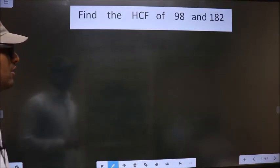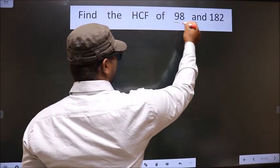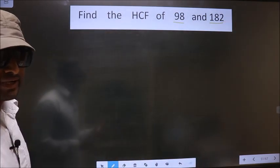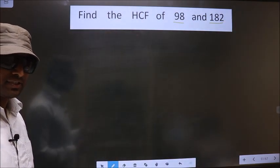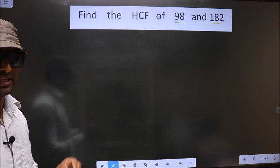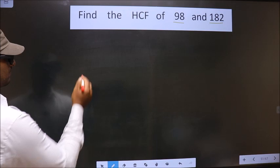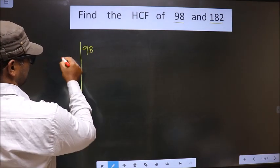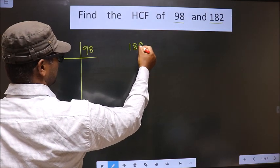Find the HCF of 98 and 182. To find the HCF, first we should do prime factorization of each number separately, that is 98 and 182.